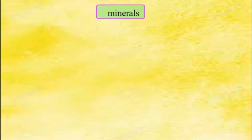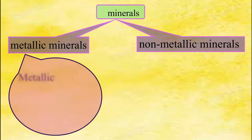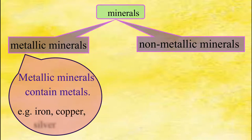On the basis of composition, minerals are classified into two: metallic minerals and non-metallic minerals. Metallic minerals contain metals. For example, iron, copper, silver, etc.